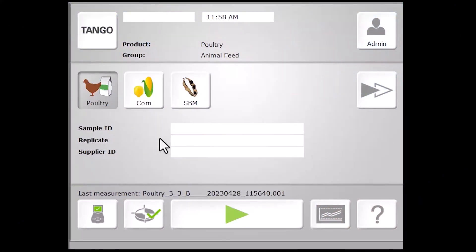When we're ready to scan a sample, we select the appropriate product, input any identifying information that is unique to that sample, and simply hit go.